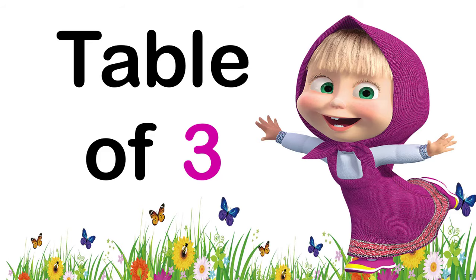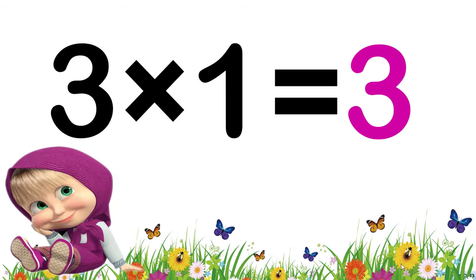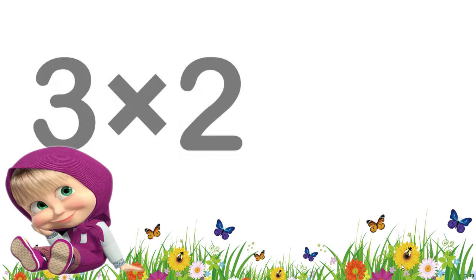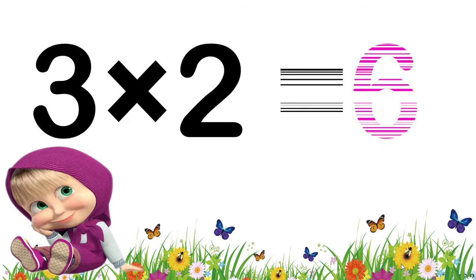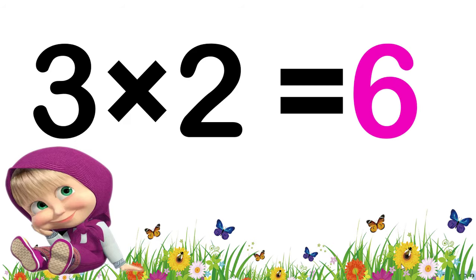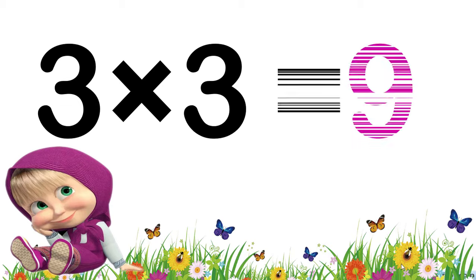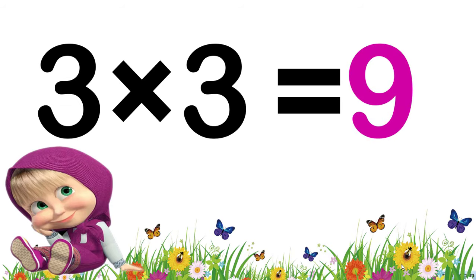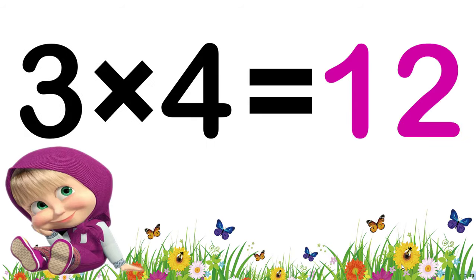Table of three. Three ones are three. Three twos are six. Three threes are nine. Three fours are twelve.